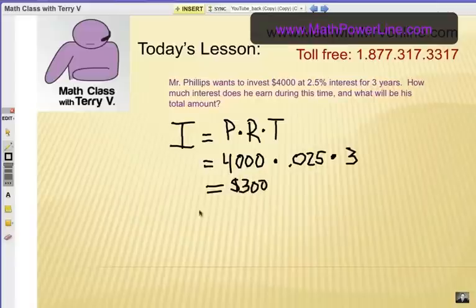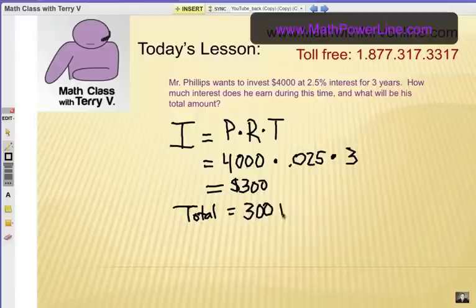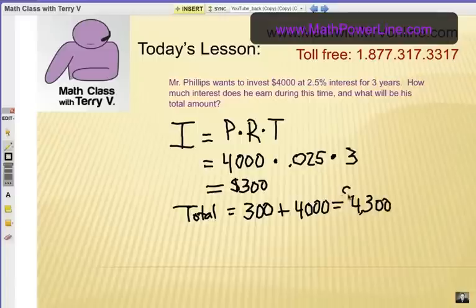Now again, that's the interest. So the total amount would be the $300 earned for Mr. Phillips at the end of three years plus the principal, the amount of money he started with. So $300 plus $4,000 would be $4,300. So if the total is asked for, you just add it on. Pretty simple example. Now let's look at some more.